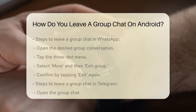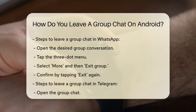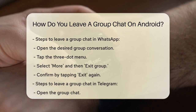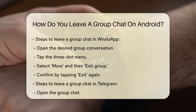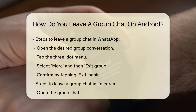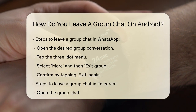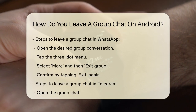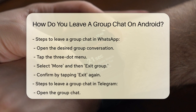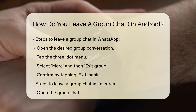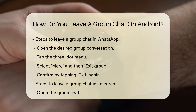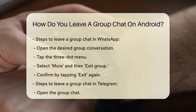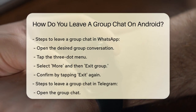If you're using WhatsApp, the process is similar. Open the group conversation you want to leave. Tap the three-dot menu in the upper right corner and then select More from the submenu. From there, choose Exit Group and confirm your selection by tapping Exit again.